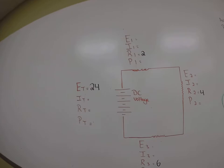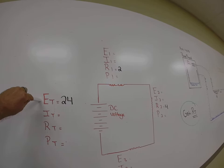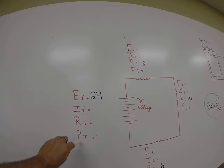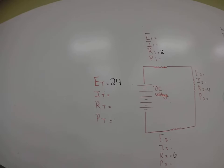Over here you can see we have ET, which means total voltage — E stands for voltage. IT — T stands for total, I stands for current. RT — T stands for total, R stands for resistance. And then last, PT, total power, and that would be referenced in watts.